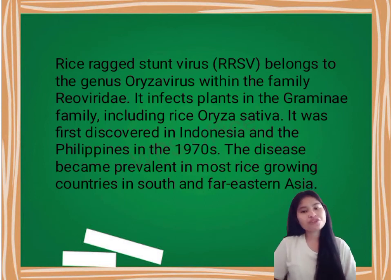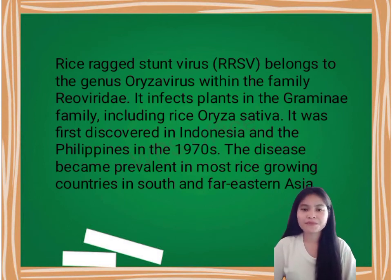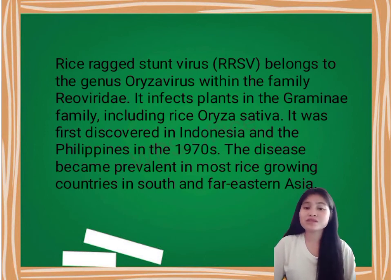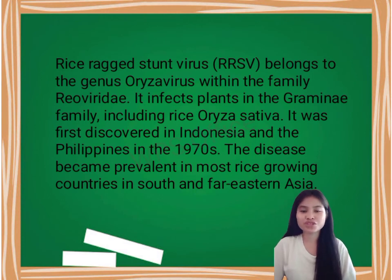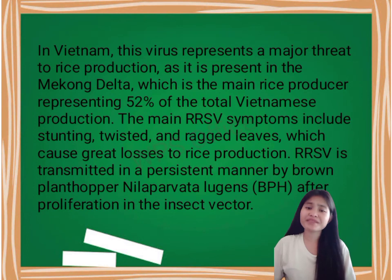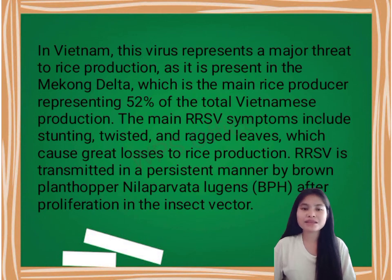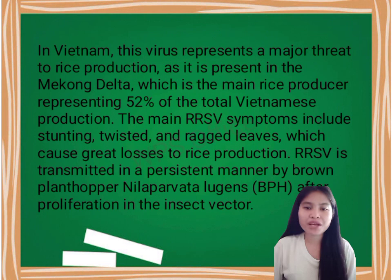It was first discovered in Indonesia and the Philippines in the 1970s. The disease became prevalent in most rice-growing countries in South and Far Eastern Asia. In Vietnam, this virus represents a major threat to rice production, as it is present in the Mekong Delta, which is the main rice-producing region, representing 52% of total Vietnamese production.